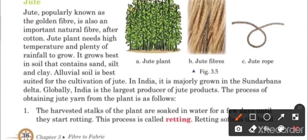Let's start with page number 36 — Jute. Jute is popularly known as golden fiber because its color is a golden shade. It is also an important natural fiber, after cotton. Jute plant needs high temperature and plenty of rainfall to grow — it requires high temperature and a lot of water.